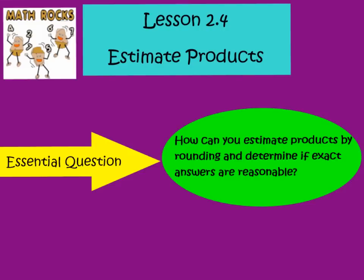We are working on page 29 of your GoMath book, so make sure that you're there with me. And let's write down our essential question at the top of page 29. Our essential question is, how can you estimate products by rounding and determine if exact answers are reasonable? Go ahead and write the essential question down at the top of your page.